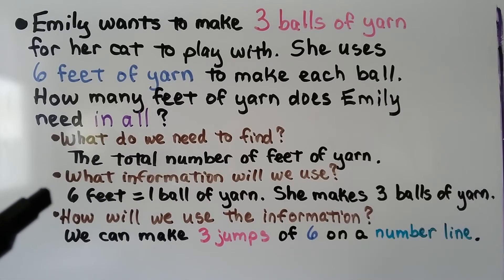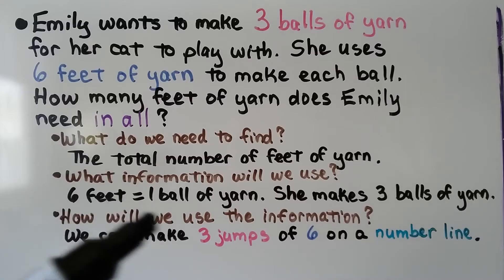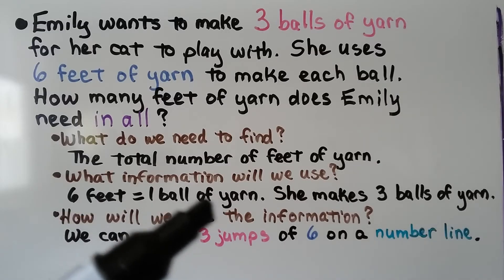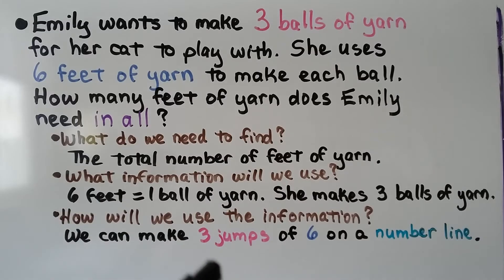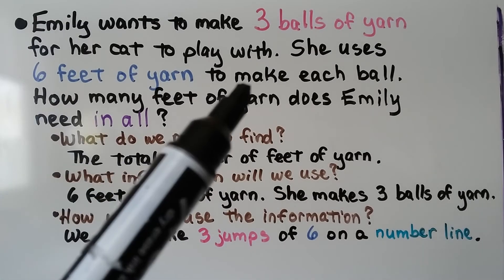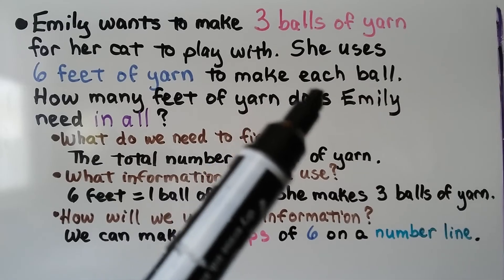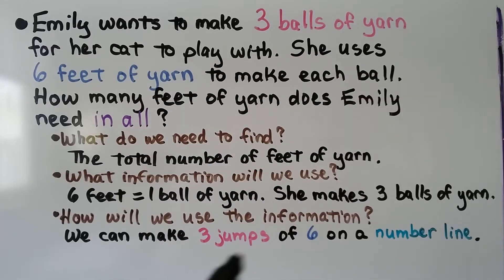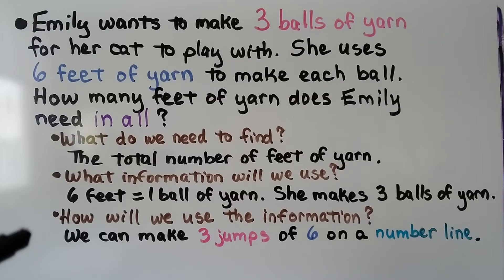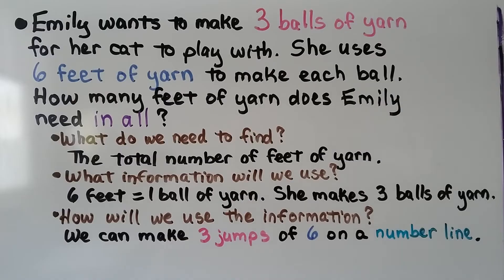What information will we use? Six feet equals one ball of yarn — six feet of yarn to make each ball. She makes three balls of yarn. How will we use the information? We can make three jumps of six on a number line.